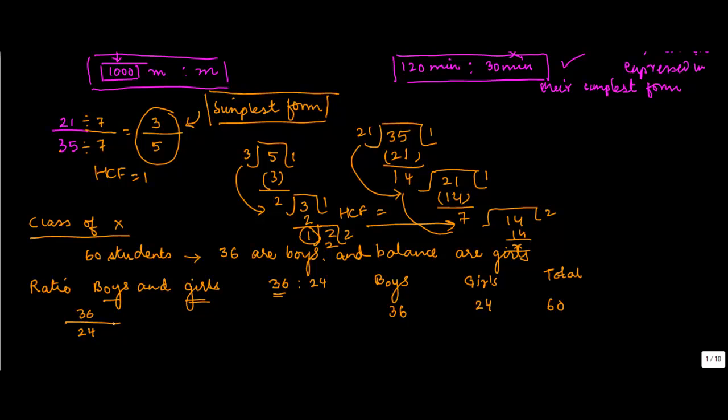36 divided by 24. Let's divide both the numbers by 4, so 36 divided by 4 will give you 9, 24 divided by 4 will give you 6. Or you can actually instead of 4 you can also divide them by 12. So 36 is to 24 can also be written as 3 is to 2. Now first let us understand what does this 3 is to 2 denote.